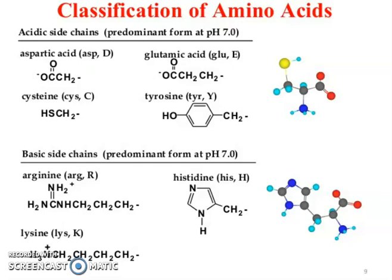Basic side chains include: Arginine (ARG), single letter code R; Histidine (HIS), single letter code H; and Lysine (LYS), single letter code K.